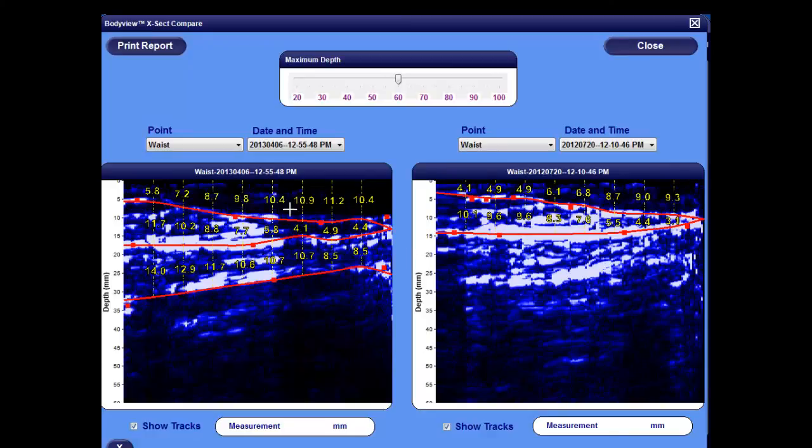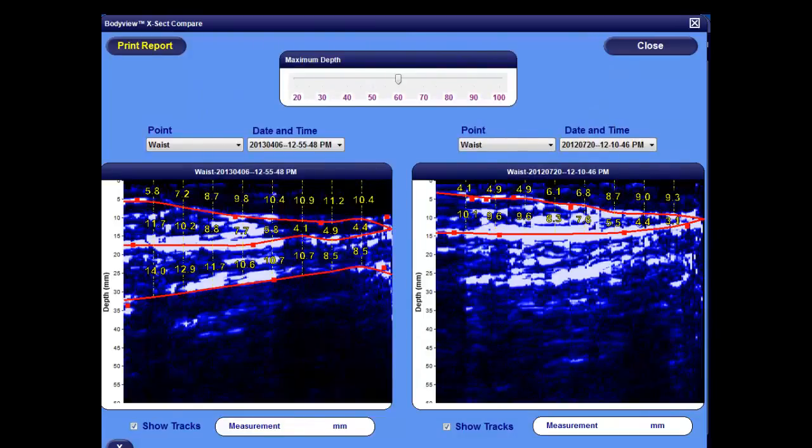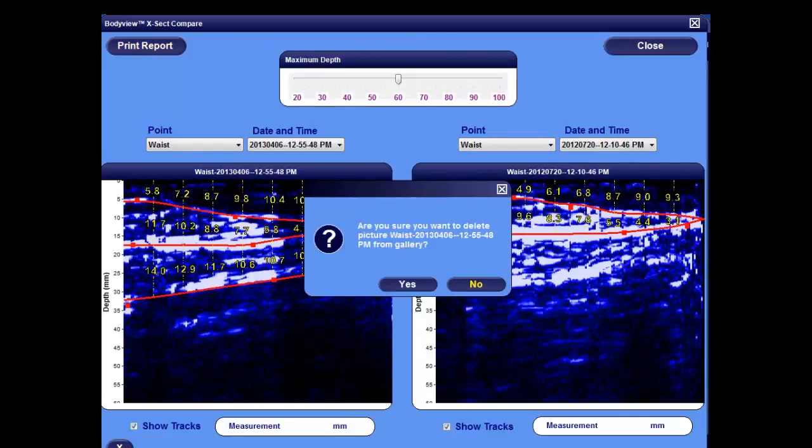Selecting the Print Report button at the top left of the screen gives you the options to print the report, save it to a file, or email it directly to your client. Selecting the X at the bottom left of the screen gives you the ability to delete images from the gallery if you wish. You can do this by selecting Yes or No.